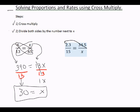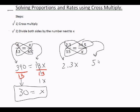The next one. 2.3 times x equals 2.3x. 15 times 34.5 is 517.5. There's an equal sign between them.